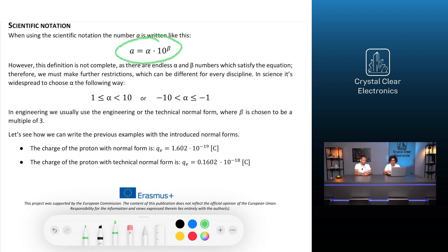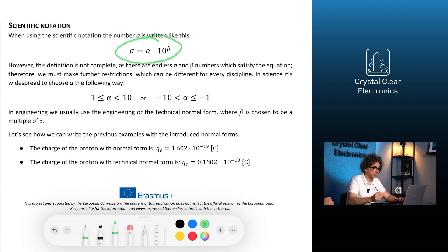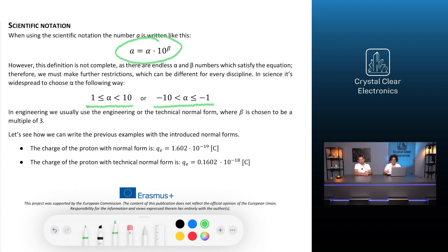In science, it's widespread to choose alpha the following way: Alpha is greater than or equal to 1 and smaller than 10, or alpha is greater than minus 10 and smaller than or equal to minus 1.